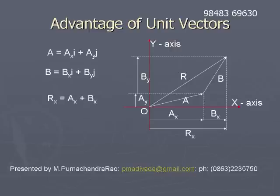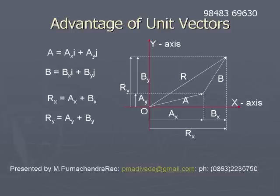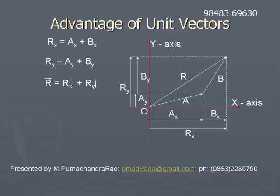The x component of r̄ is rx, which equals ax plus bx, and the y component ry equals ay plus by. By computing rx and ry, we get the resultant vector r̄. Therefore, r̄ equals rx·î plus ry·ĵ, where rx·î is the x component and ry·ĵ is the y component.